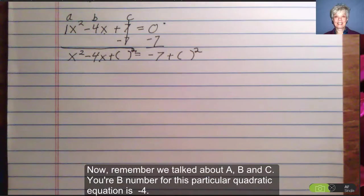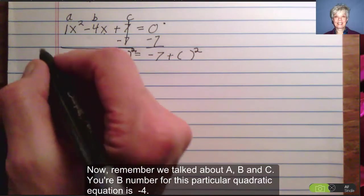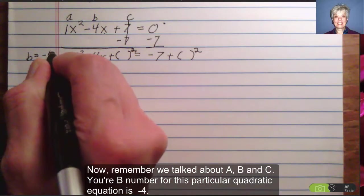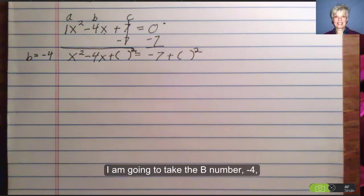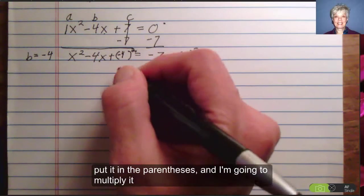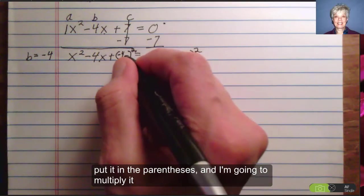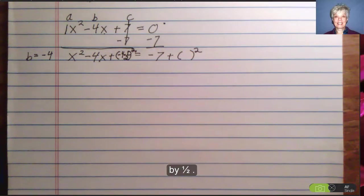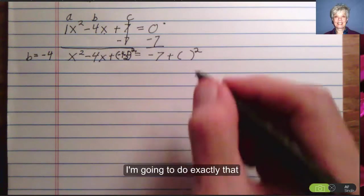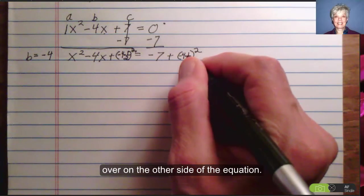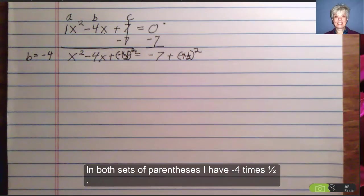Now remember we talked about a, b, and c. Your b number for this particular quadratic equation is negative 4. I am going to take the b number, negative 4, put it in the parentheses, and I am going to multiply it in the parentheses by 1 half. I am going to do exactly that over on the other side of the equation. In both sets of parentheses I have negative 4 times 1 half.